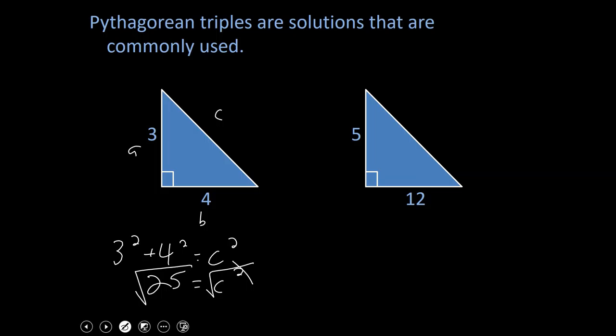In order to solve for C, you would square root. To cancel the square, you would square root 25. And that's going to make five equal to C, making this side C. So this is a Pythagorean triple of three, four, five.